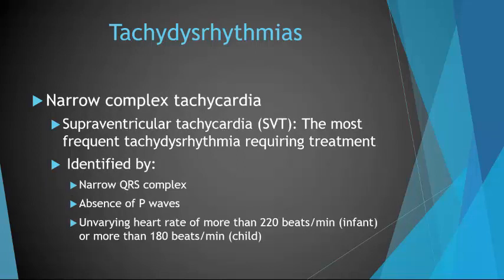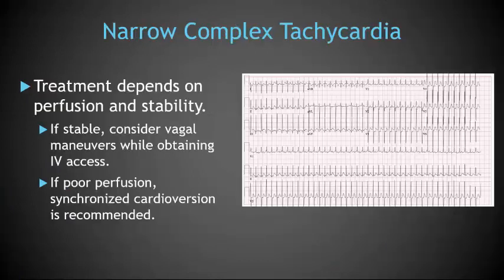For narrow complex tachycardias, supraventricular tachycardia is the most frequent tachydysrhythmia requiring treatment. The ECG will reveal a regular ventricular rhythm with a narrow QRS complex. The heart rate is often 220 beats per minute or faster in an infant and 180 beats per minute or faster in a child, and remains constant. Treatment depends on perfusion and stability: if stable, consider vagal maneuvers while obtaining IV access. If poor perfusion, synchronized cardioversion is recommended. If the child is hemodynamically stable and SVT persists despite vagal maneuvers, consider administration of adenosine.